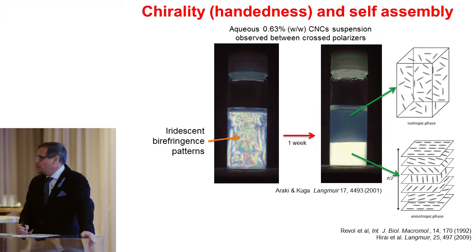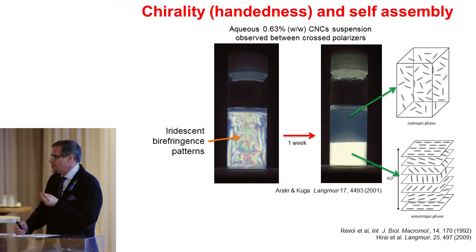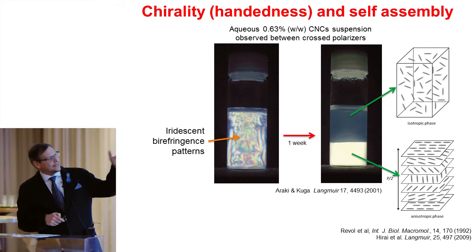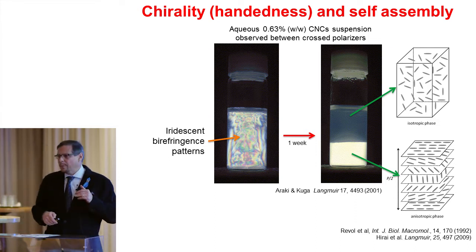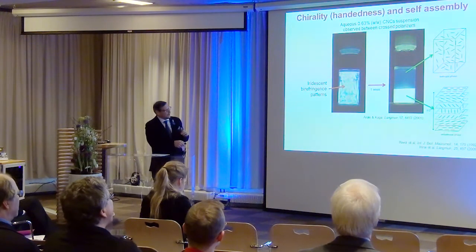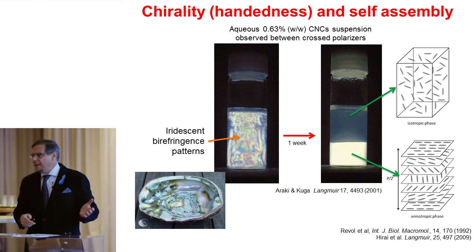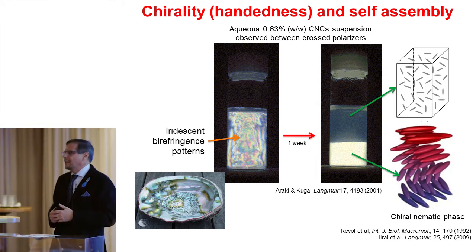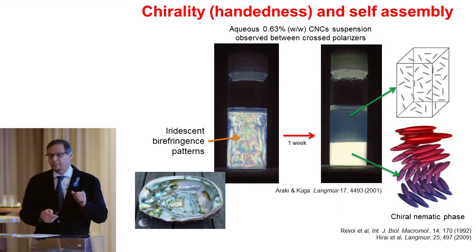Now the second property has to do with chirality. Chirality means that those nanocrystals in suspension come from a given organization. If you take a nanocrystal suspension, they form these iridescence patterns, and if you let it stand, eventually it will form two phases: an isotropic phase and an anisotropic phase. If we think about the anisotropic phase, what is happening is that the nanocrystals are organized in different layers, and there is a full rotation in a given distance called the pitch, P. This effect is very much what you see in some marine shells and many natural elements, and it is defined as a chiral nematic phase in the area of so-called liquid crystals. So cellulose from trees has this very interesting property: liquid crystals.